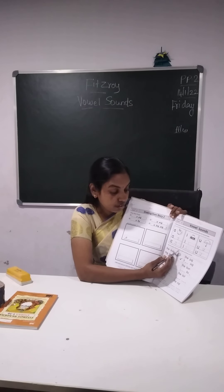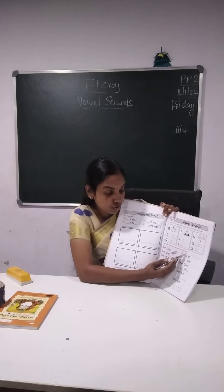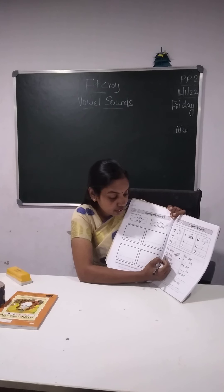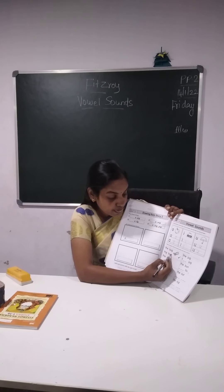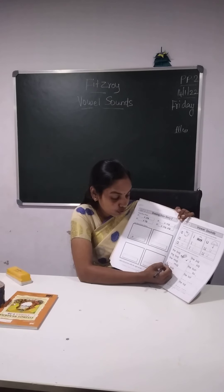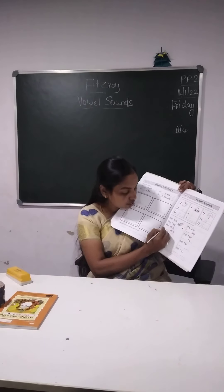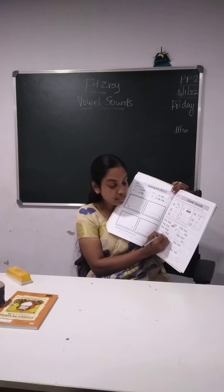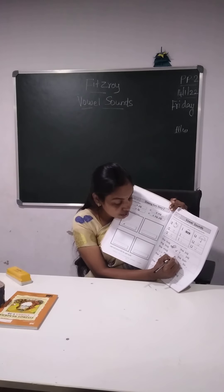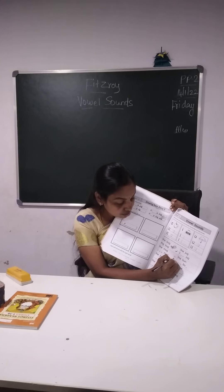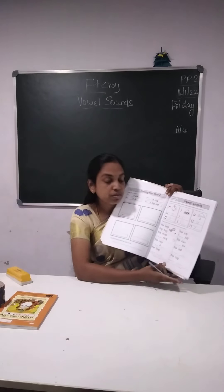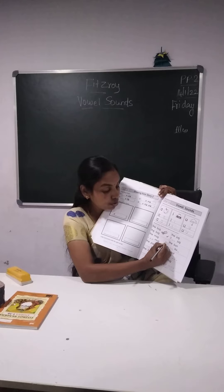Likewise, read the words, write the missing letters, and draw the picture. So here you have to read the word: the bug. Here the missing letter is here. Then the mug — what is the missing letter? You will write here: T-H-E. The mug. So you have to draw the mug here. You have to draw, children.